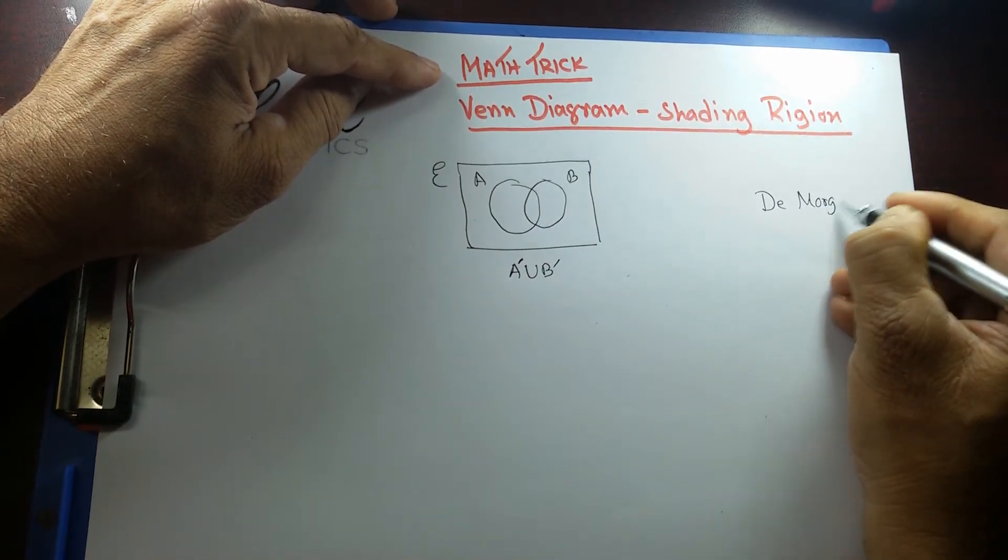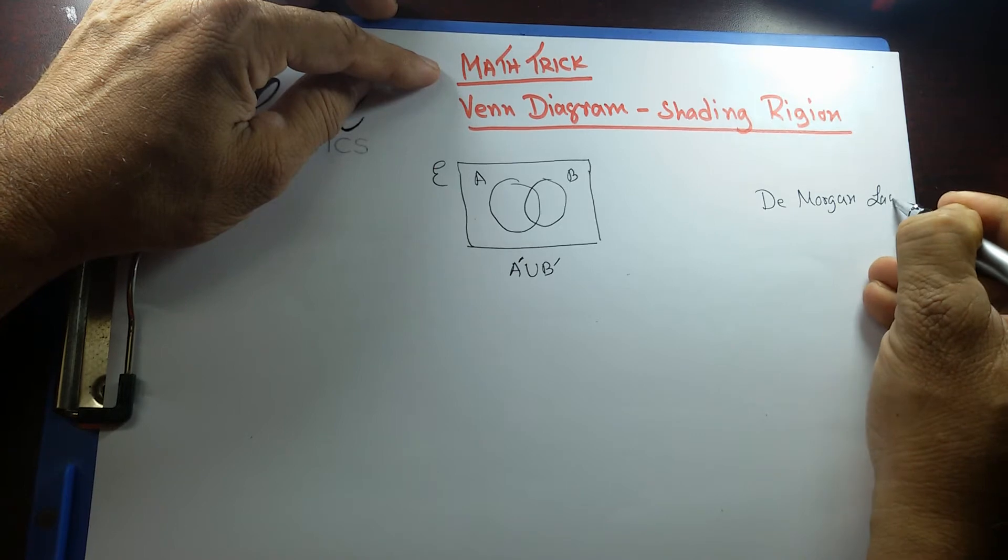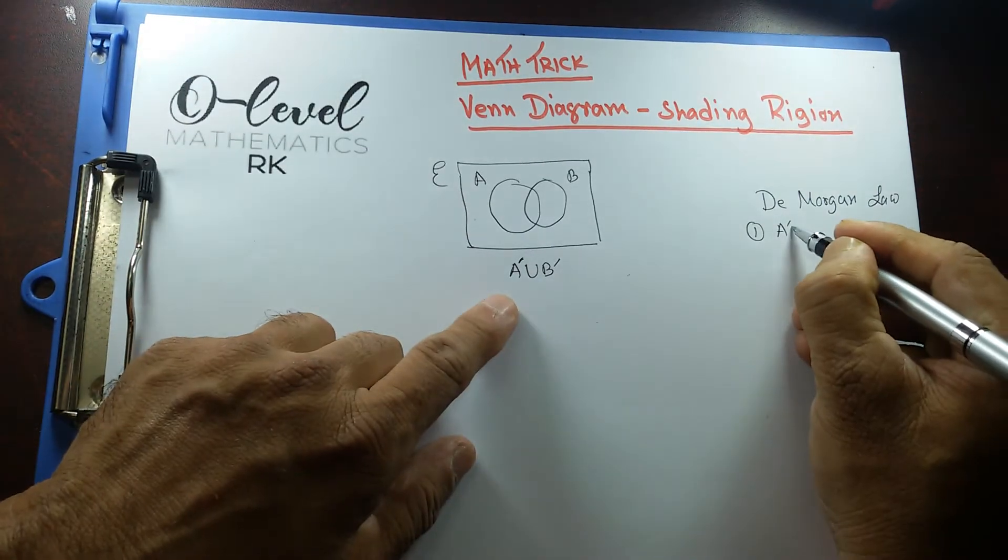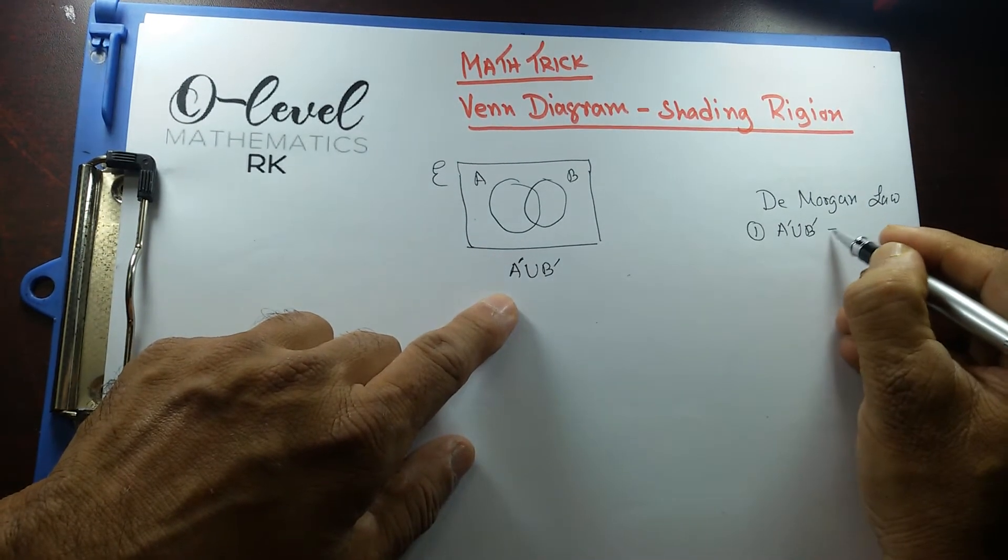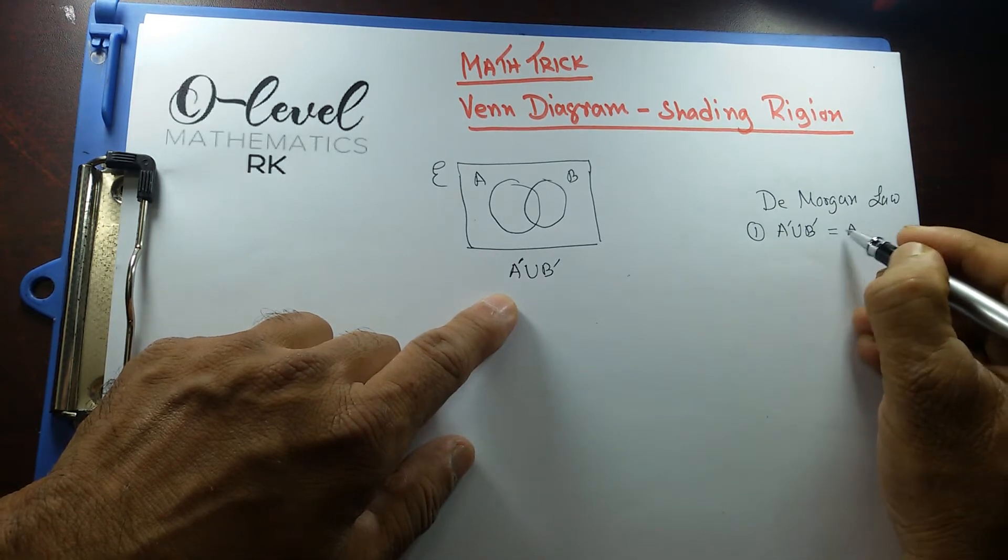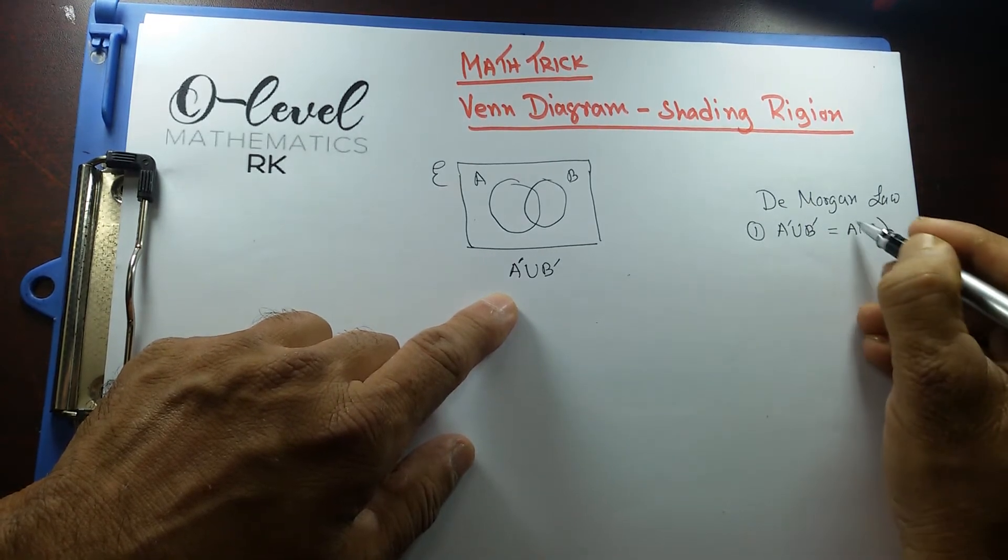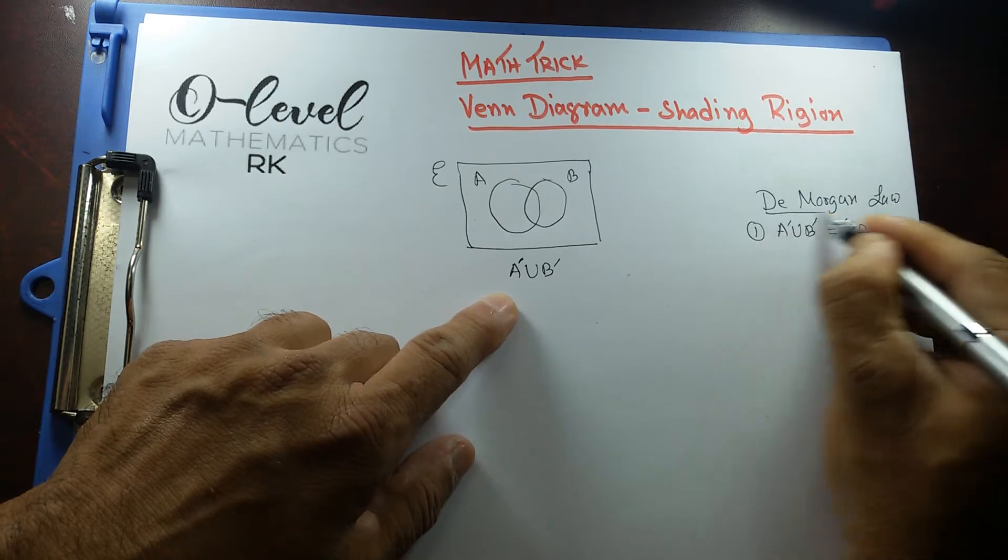De Morgan's Law states that if I have A prime union B prime, that's actually equals to A intersecting B whole prime. That's the first law.